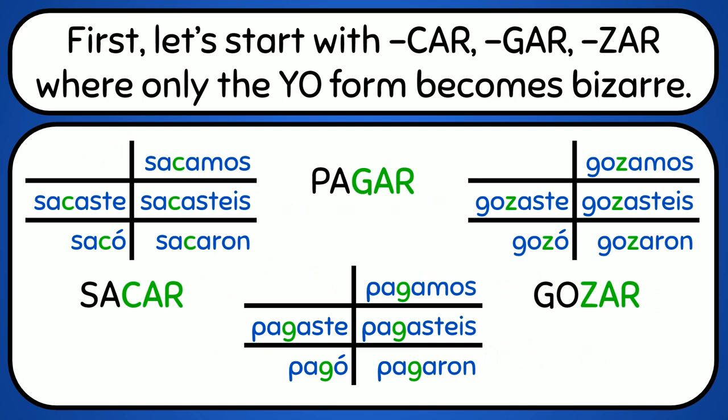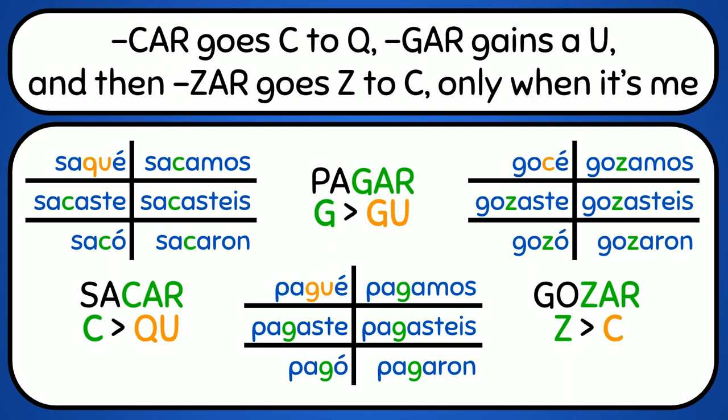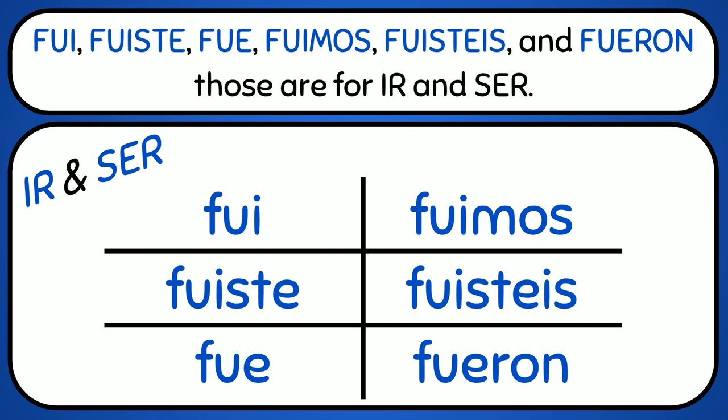First let's start with car, gar, zar where only the yo form becomes bizarre. Cargo C to Q, cargué with a U. And then zar goes Z to C, only when it's E. Fui, fuiste, fue, fuimos, fuisteis, fueron. Do -ar, for -er and -ir.